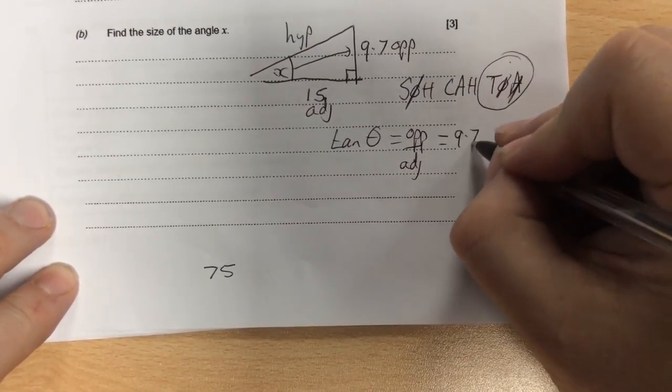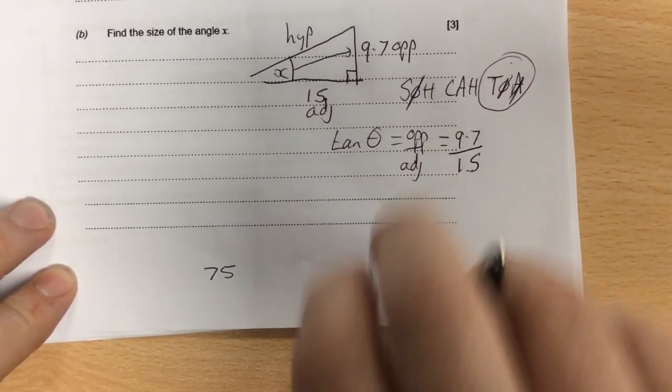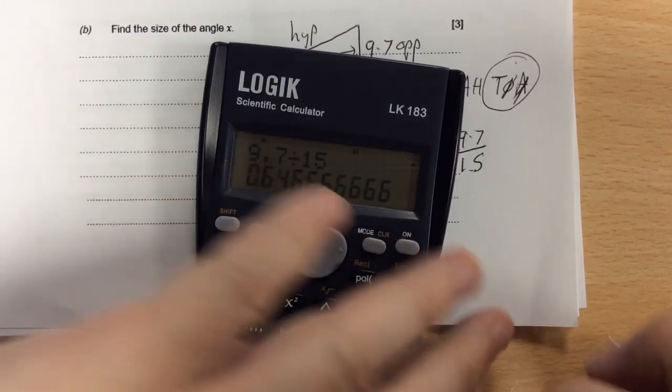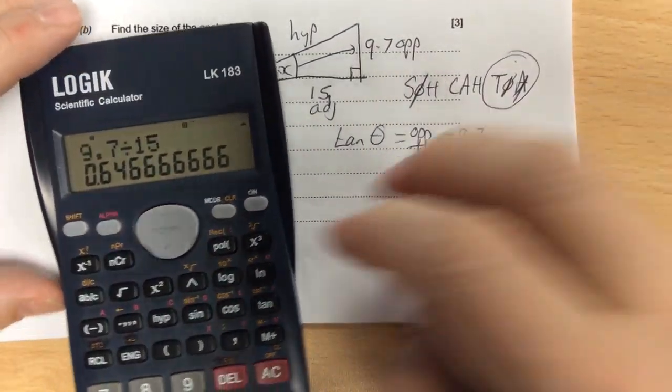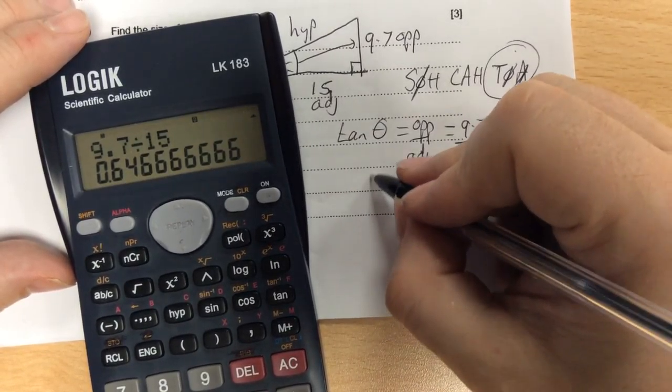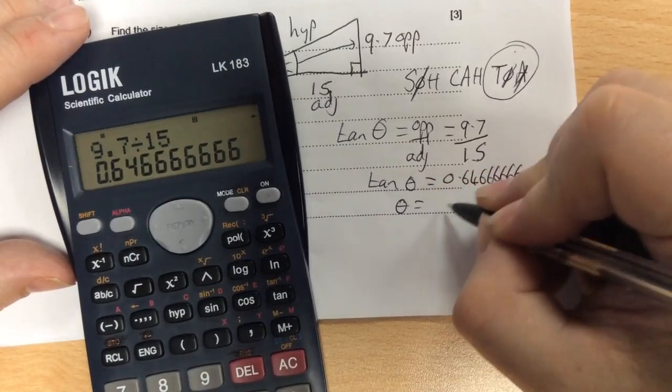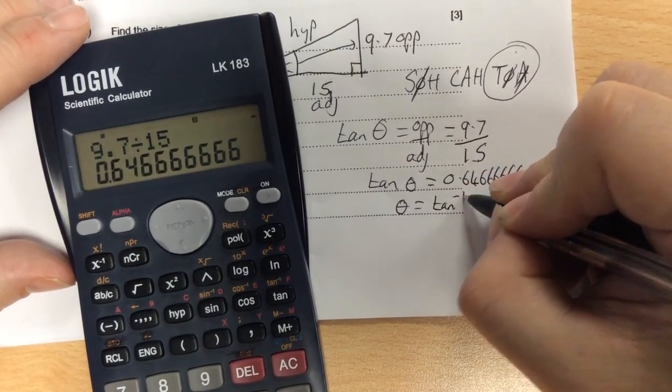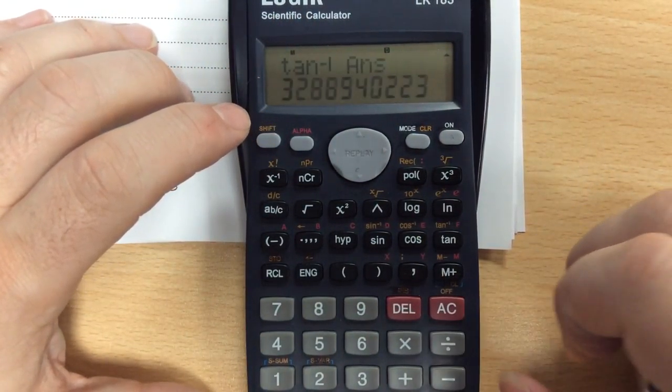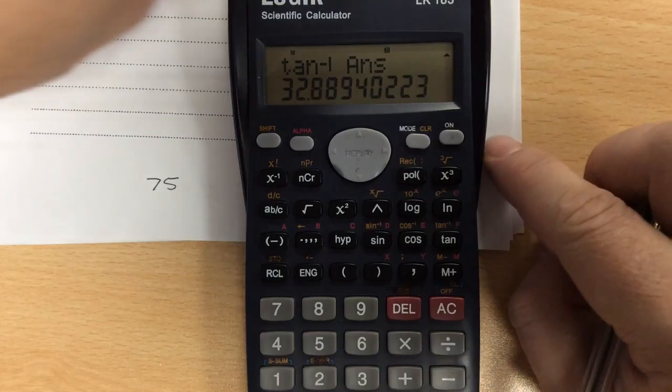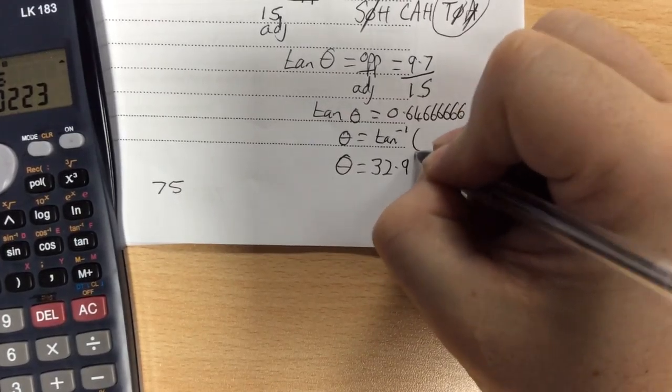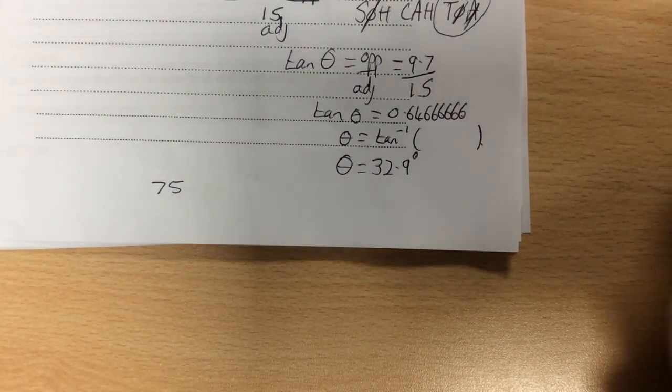When you're putting them in, it becomes 9.7 divided by 15, which equals 0.646. But you want to find theta, and tan theta is that, so you have to press tan to the minus 1 of that answer. With your answer, you press shift tan equals, and the answer to one decimal place is 32.9 degrees.